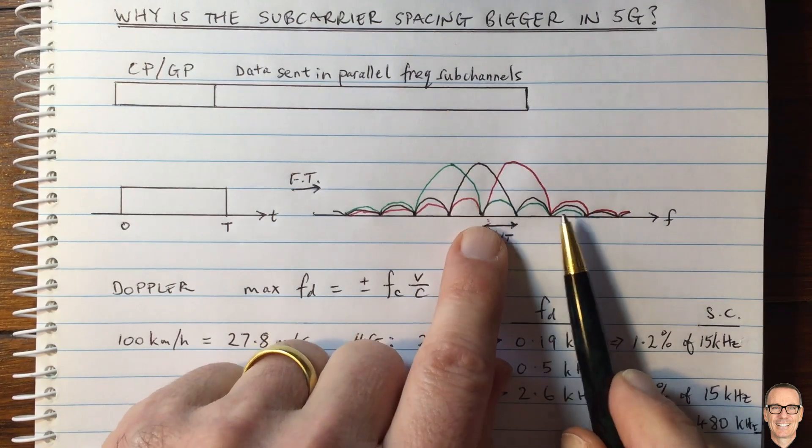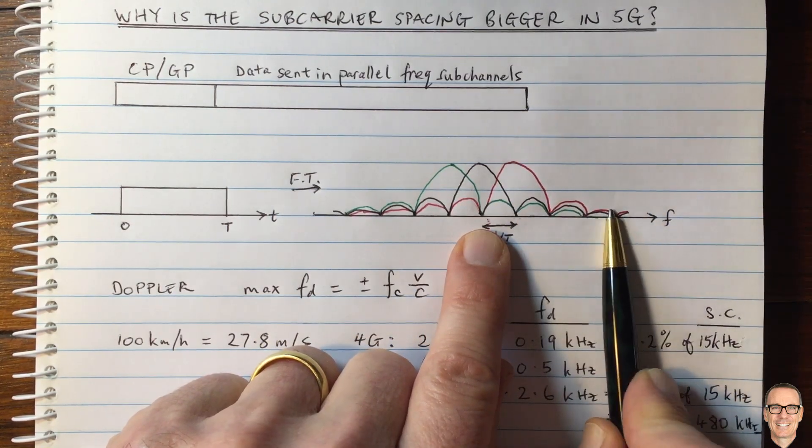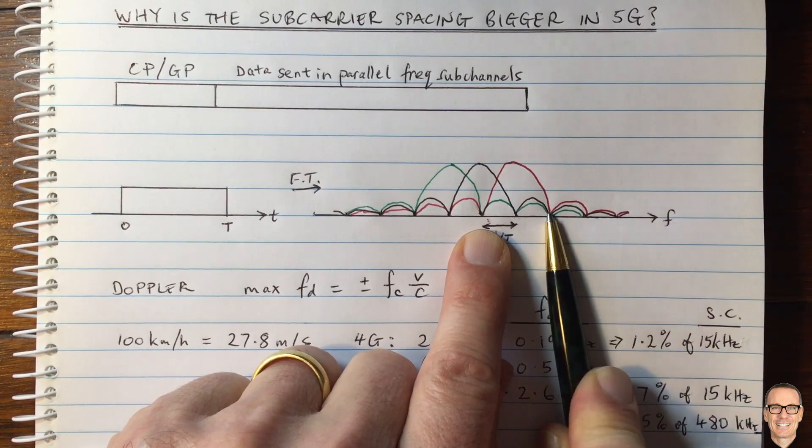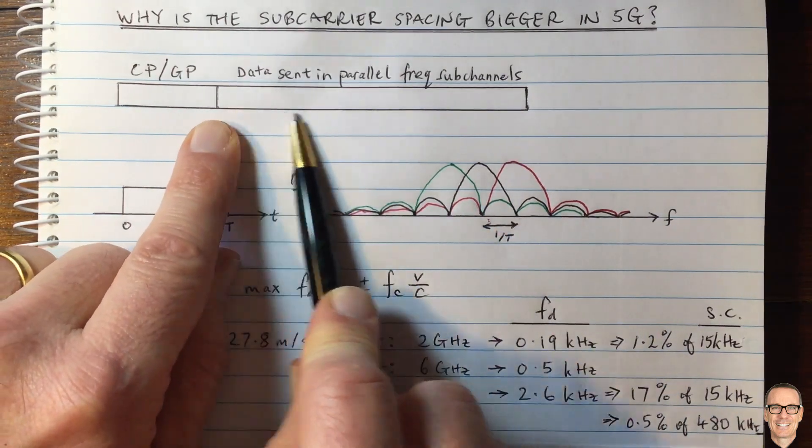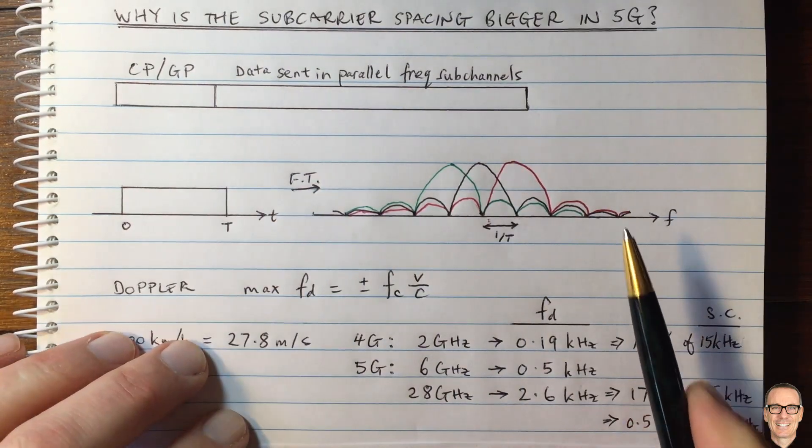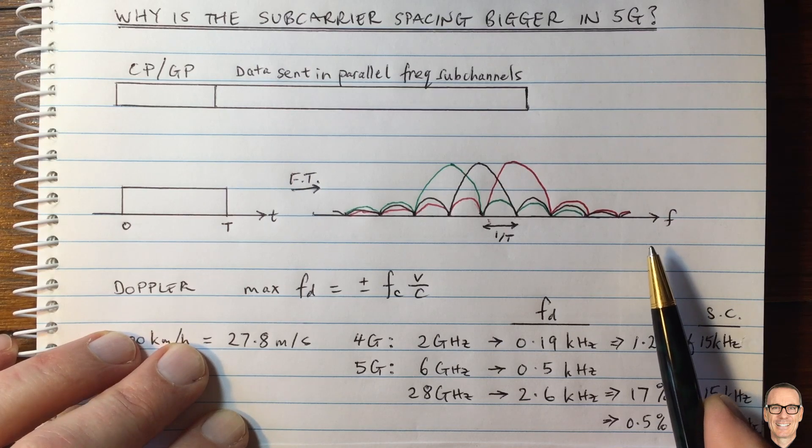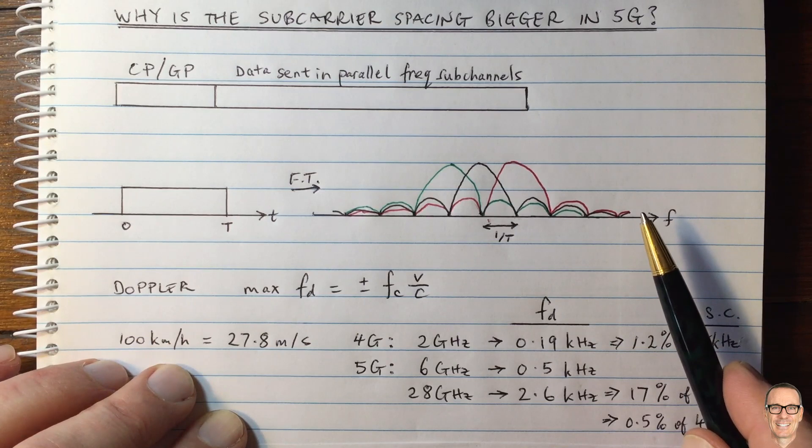Another problem with having narrower sub-channels and only putting data every second one is that because they're narrower, you would have more samples in your symbol. And that means you would need a larger fast Fourier transform to do the implementation of the OFDM. And that means more computation power and it means a shorter battery life for your device.